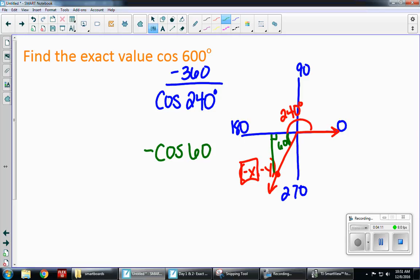From your chart, the cosine of 60 is 1 half. And I have to make it negative. So our final answer is negative 1 half.